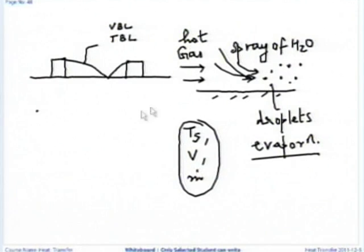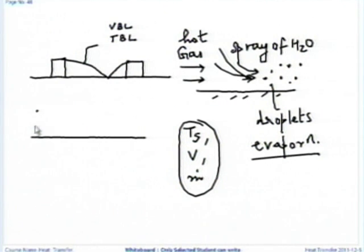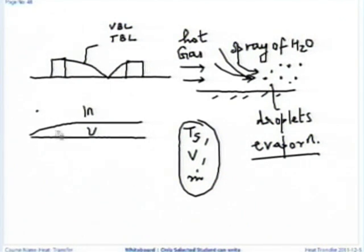When I have a flow over a flat plate, Professor Arun has already taught us that we can differentiate the flow into two domains. One is the viscid domain, another one is the inviscid domain. In the viscid domain — that is, within the boundary layer — there is an effect of viscosity, and in the inviscid domain there is no viscosity.